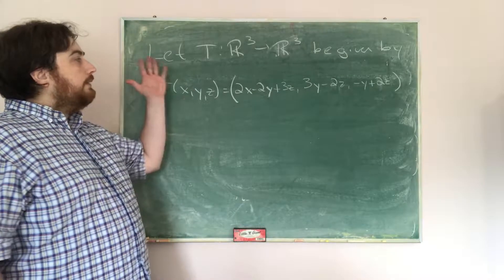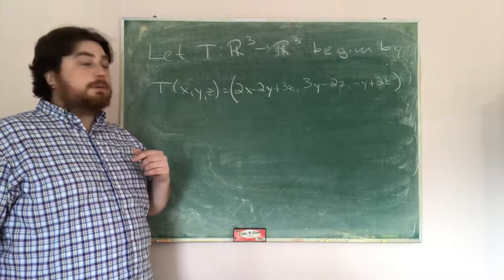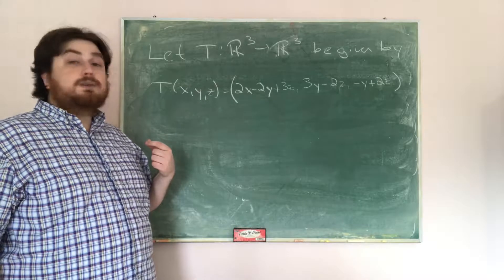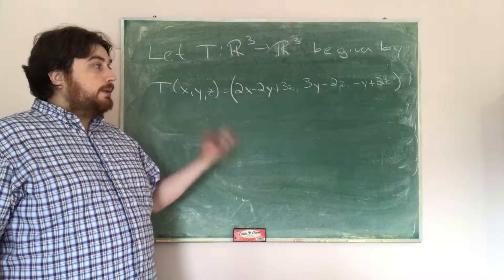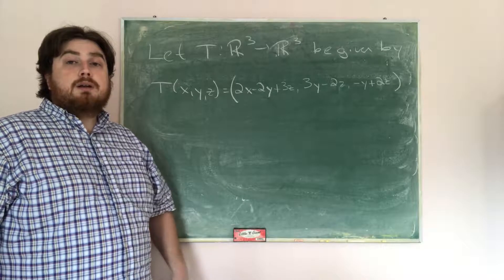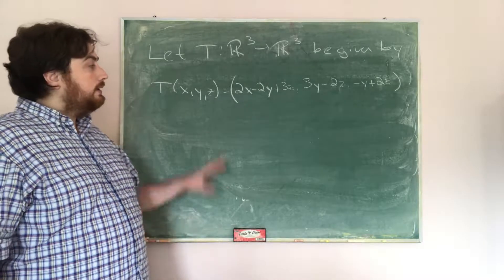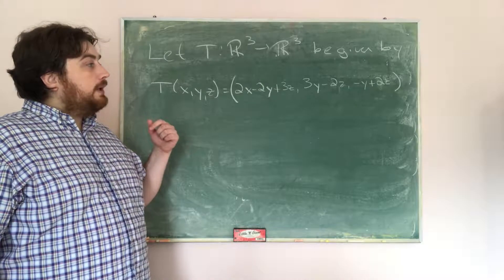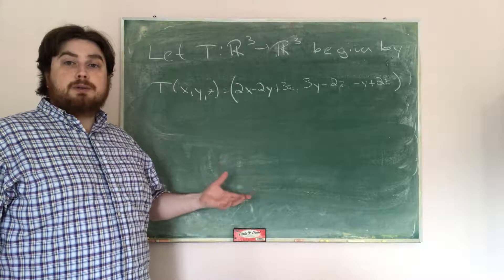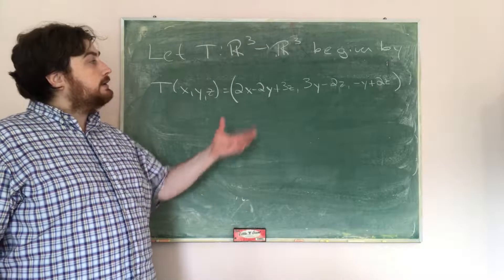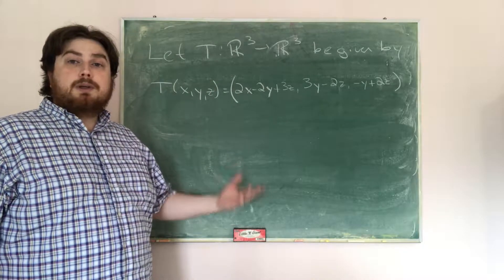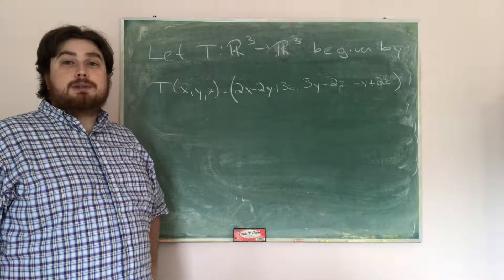What we're going to have today is the mapping from R³ to R³, which is given by T(x,y,z) = (2x − 2y + 3z, 3y − 2z, −y + 2z). Our goal is to find a matrix such that we have a diagonal matrix which represents this linear transformation. But in order to do that, we have to find a non-standard basis of R³. So we both want to find the basis and we want to find the diagonal matrix which represents this.